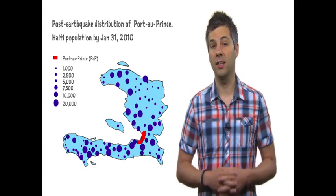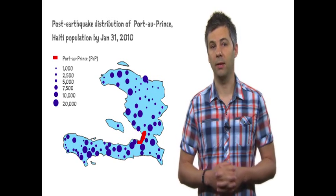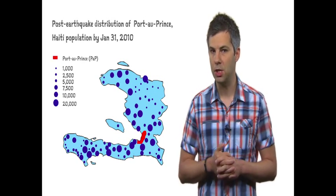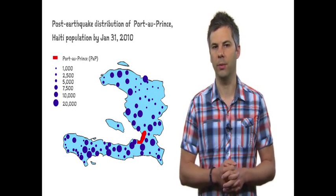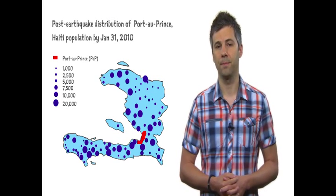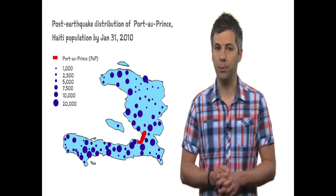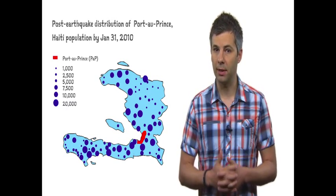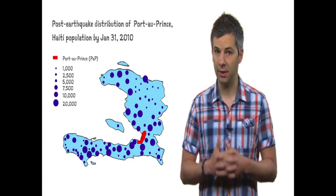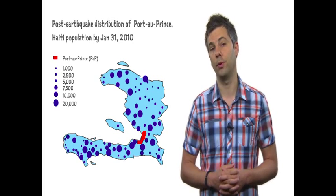There are many, many other examples. One study demonstrated how mobile phone data could be used to track population movement after the Haiti earthquake in 2010, suggesting that estimates of population movements during disasters and outbreaks can be delivered rapidly and with potentially high validity in areas with high mobile phone use.